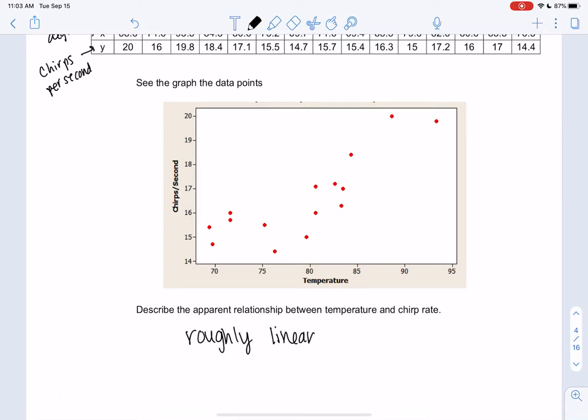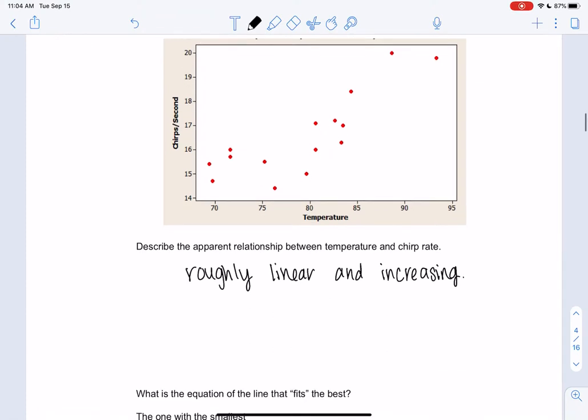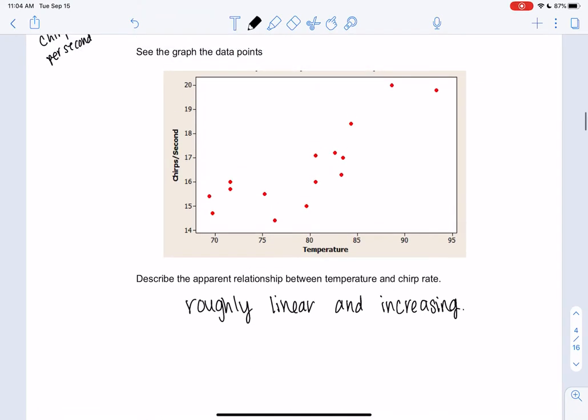And I also notice that it's increasing, going upward. So those are the two ways I would describe it, roughly linear and increasing. So what we're going to try to figure out in this section is what line fits best. Is it this line? Is it this line? Is it this line? So that's what we're going to mess with in this section.